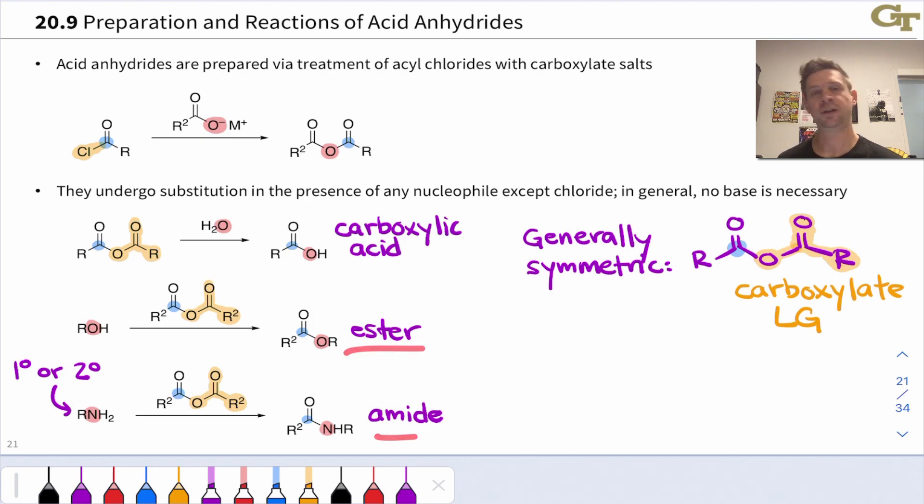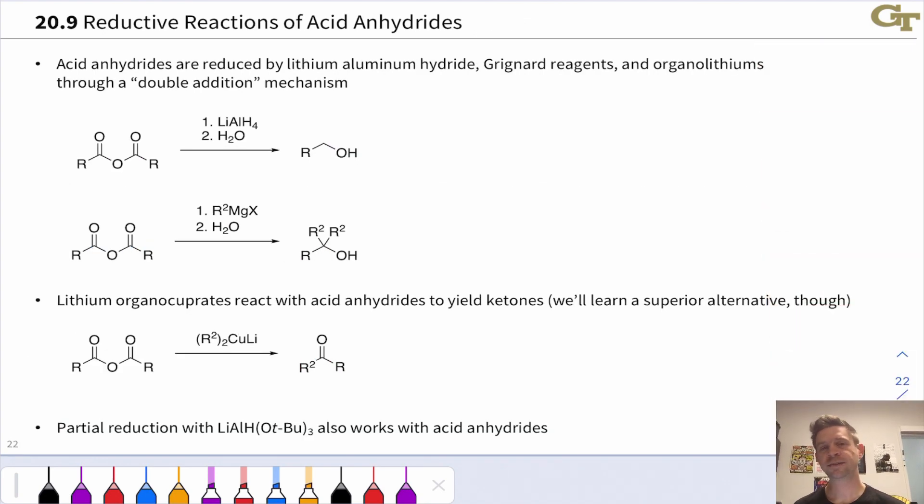The reductive reactions of acid anhydrides very much parallel the reduction reactions of acyl chlorides. They are reduced all the way to primary alcohols by lithium aluminum hydride via an aldehyde intermediate through a mechanism that is perfectly analogous to the mechanism of reduction of acyl chlorides.